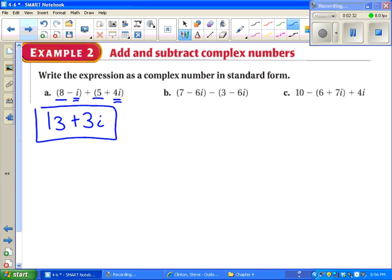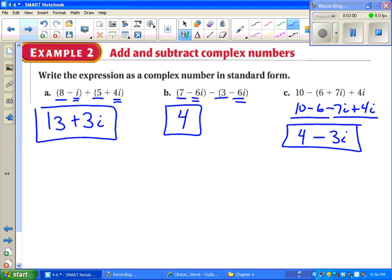Subtraction works the same. We just have to distribute that minus sign. 7 and negative 3 makes 4. Negative 6 minus a minus, which really makes a plus. So they cancel out. Just left with 4. Or we can distribute the minus sign as we go. Makes it a little easier, maybe. And then combine the real 10 and 6, and the imaginary, negative 7 and 4. So addition and subtraction works pretty nicely.